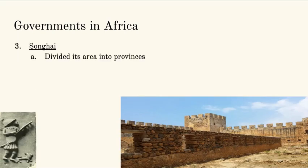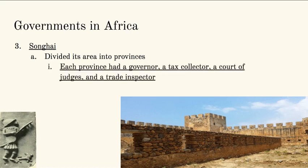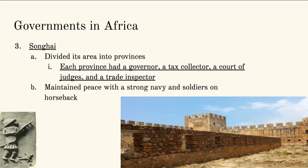When we get to Songhai, it divides its area into provinces. As a king, if you cannot reach every area of your empire in one day, it makes sense to divide it into smaller sections where somebody else is in control and reports back to you. So each province in Songhai has a governor, a tax collector, a court of judges, and a trade inspector. You're looking at a much more bureaucratic system — bureaucracy meaning a lot of employees in one government, very similar to what we see in China where there are just a lot of officials in charge of every single thing. The governor controls that specific area, hired by the king. The tax collector focuses on just the money, the judges on just the law, and there's a trade inspector making sure the income collected is correct. They maintain their peace with a really strong navy and soldiers on horseback.